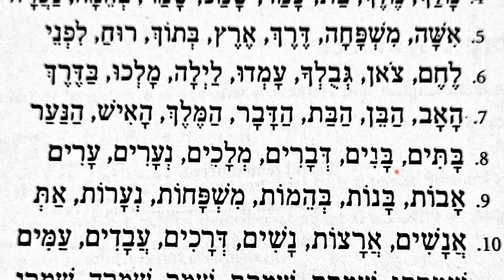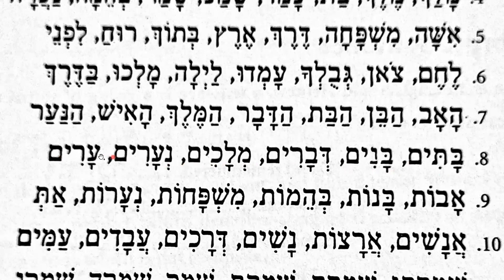And the 8th one — it should be Nun; I think there is a typing mistake here. Vanim. Devarim. Just a clue for you: we are going to study these things in the coming classes. The -im ending — the Yod and Mem — you can see it appearing in these words: Batim, Banim, Devarim, Melakim, Naarim, Arim. These are plural words.